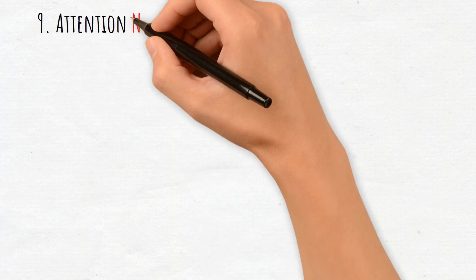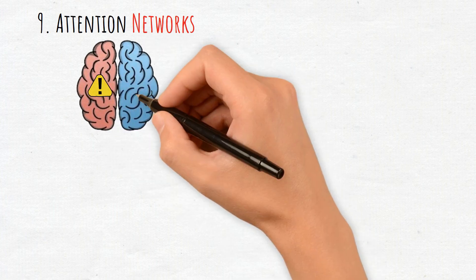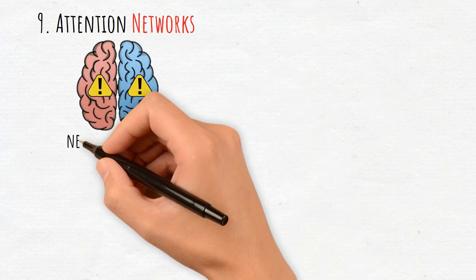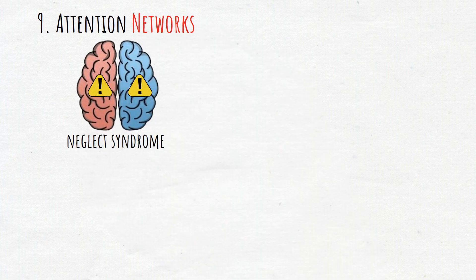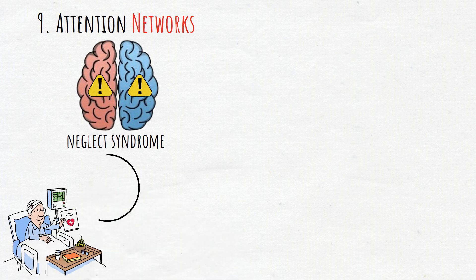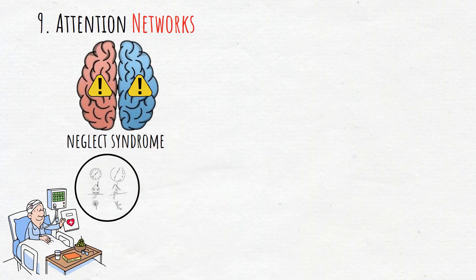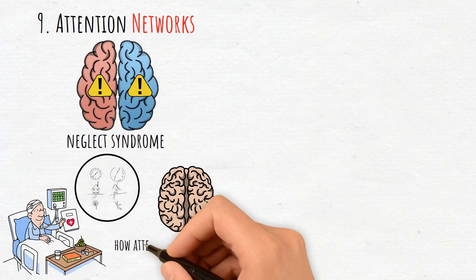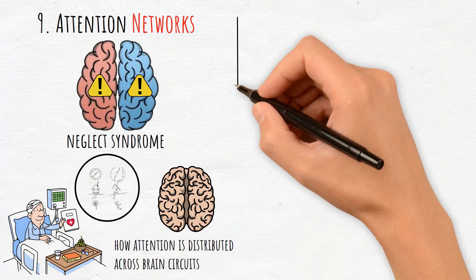9. Attention Networks. Different brain networks manage attention, with damage to this area causing conditions like neglect syndrome, where patients ignore part of their visual field. This reveals how attention is distributed across brain circuits.